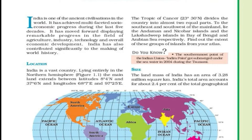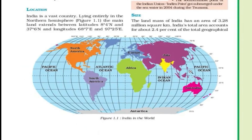The first topic is location. India is a vast country lying entirely in the northern hemisphere, which means above the equator. You can see here — this is the equator line, and this divides the world into two equal hemispheres. The upper part of the equator is known as the northern hemisphere, and the lower part is known as the southern hemisphere.